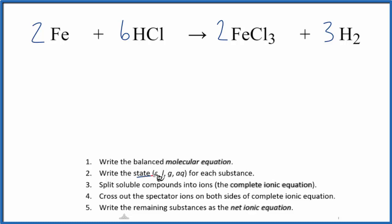Next we need to write the states of each of these components here. So iron, that's a metal, it's going to be a solid. Hydrochloric acid, that's going to be aqueous. And then for these two compounds here, chlorides are very soluble. So we're going to put an AQ. That's going to dissolve in water.